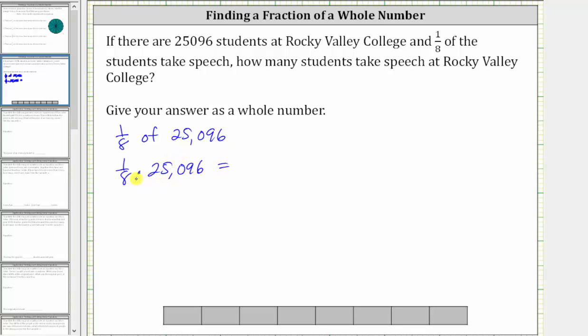Because the product involves a fraction, let's write 25,096 as a fraction with a denominator of one. Now to multiply fractions, we multiply the numerators and the denominators. Notice this gives us 25,096 over eight.